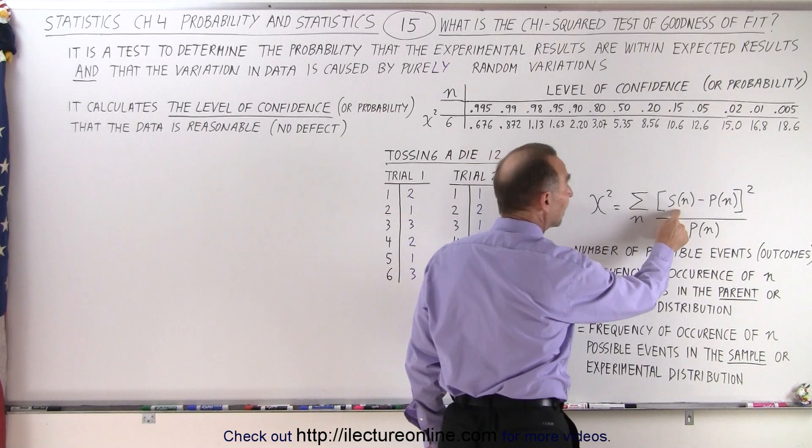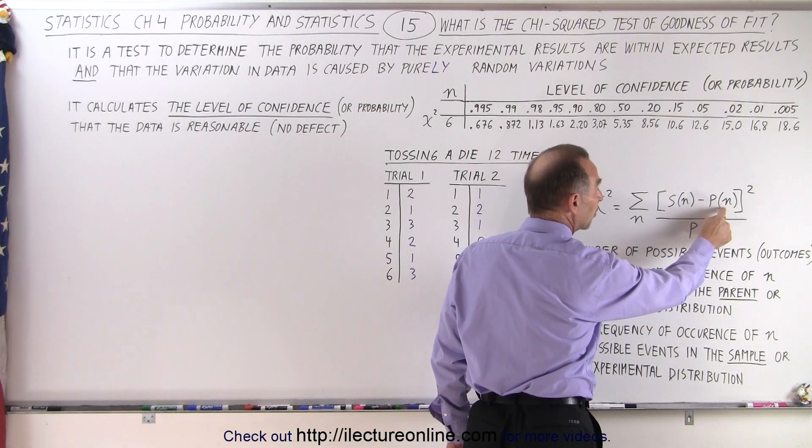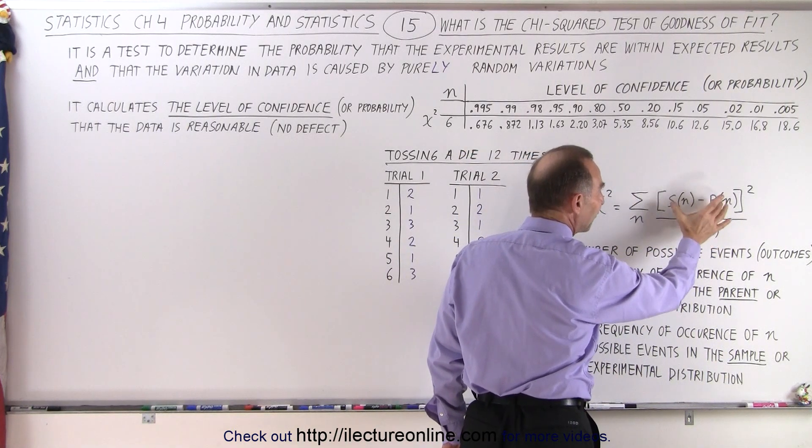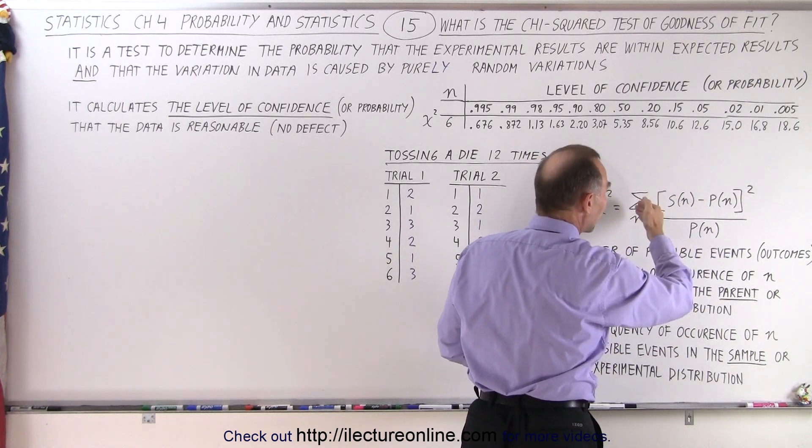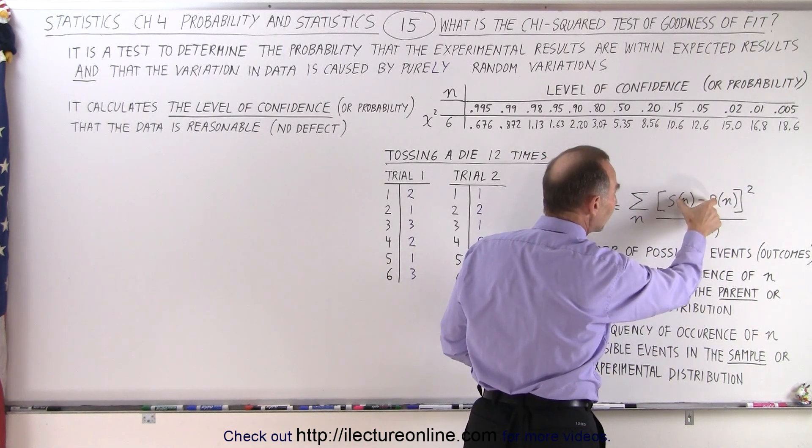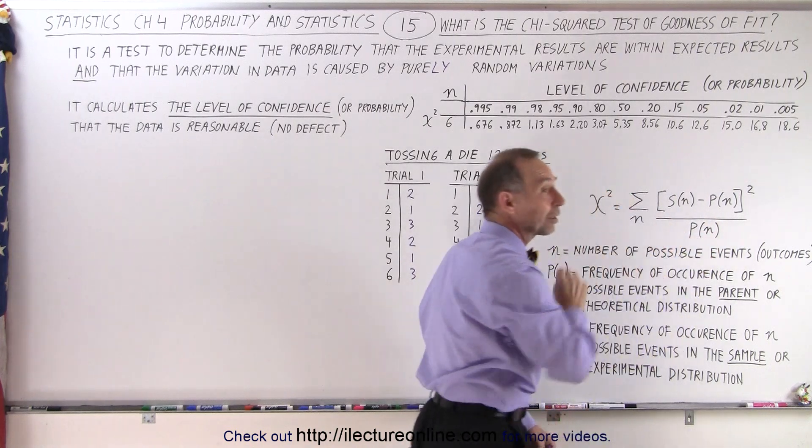S(N) is the frequency of occurrence of N possible events in the sample or experimental distribution. So this is the sample data. This is the theoretical data or the theoretical results. So you take the difference of each one, you square that, you sum that up, and then you divide each of these by the theoretical result.